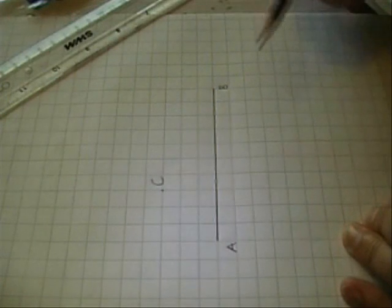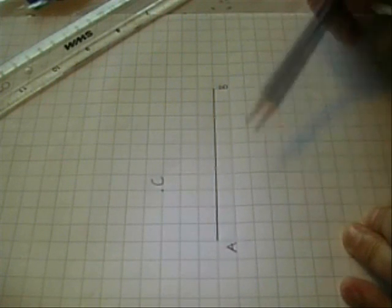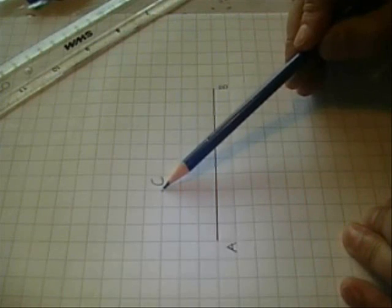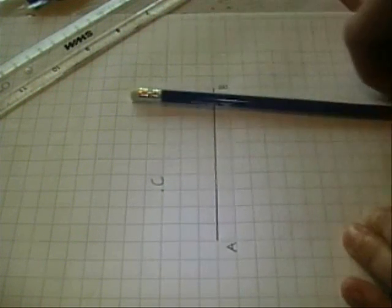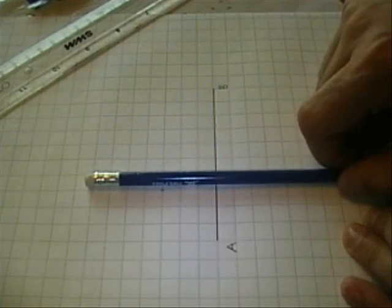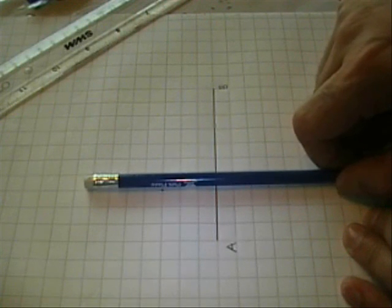Again, what we're going to be doing is taking the point C, we're going to draw a perpendicular line to AB. So very simply, our line is going to look like this, going through C and cutting AB.